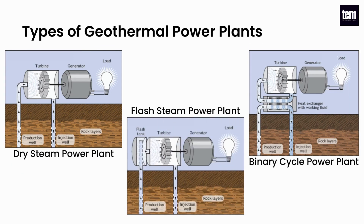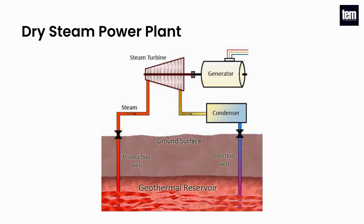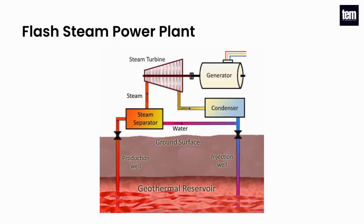Three main types of geothermal power plant technologies are dry steam, flash steam, and binary cycle power plants. Dry steam power plants use steam that goes directly from a geothermal reservoir to a turbine, which drives a generator that produces electricity. This type of power plant is always located at geyser geothermal areas. Flash steam power plants take high pressure hot water from deep inside the Earth and convert it to steam that drives generator turbines. When the steam cools, it condenses to water and is injected back into the ground to be used again. Most geothermal power plants are flash steam plants.